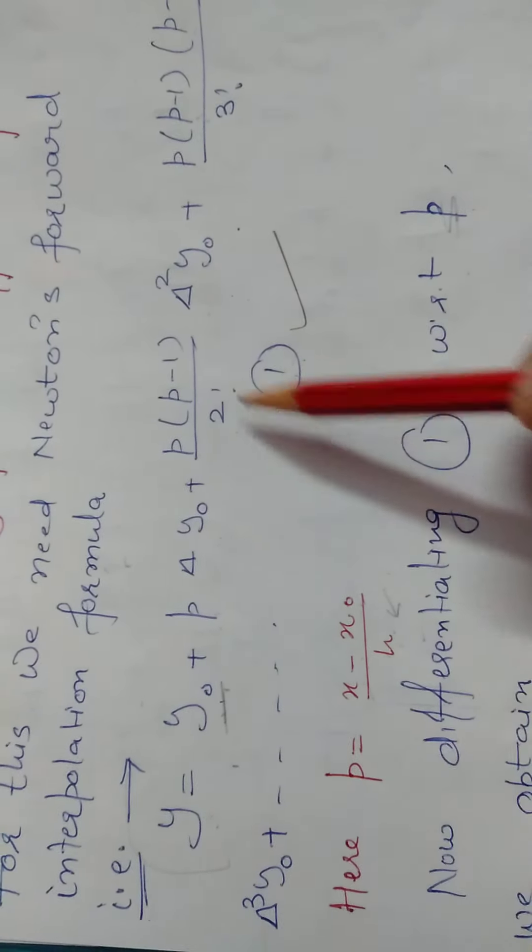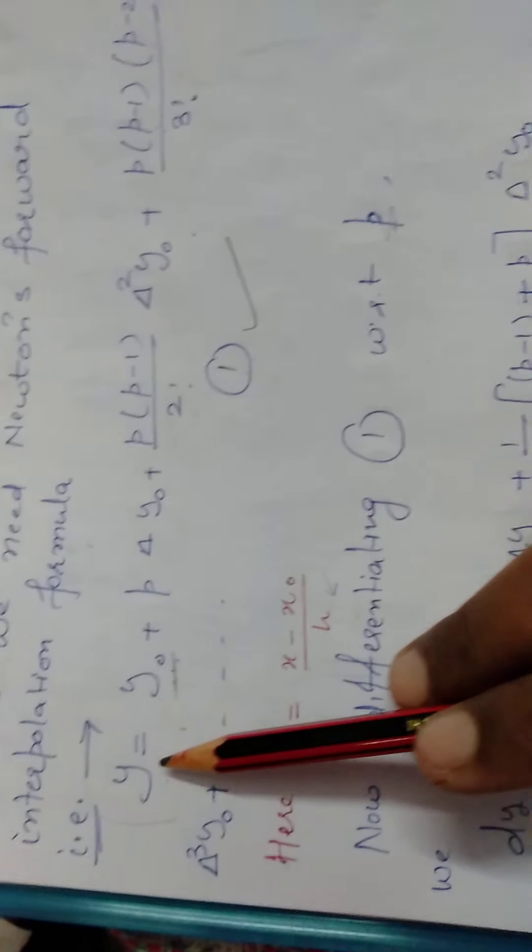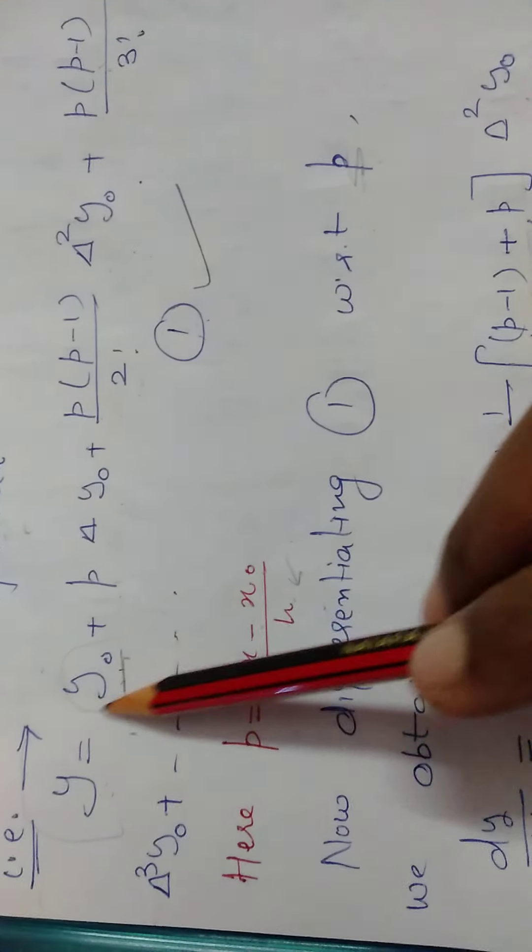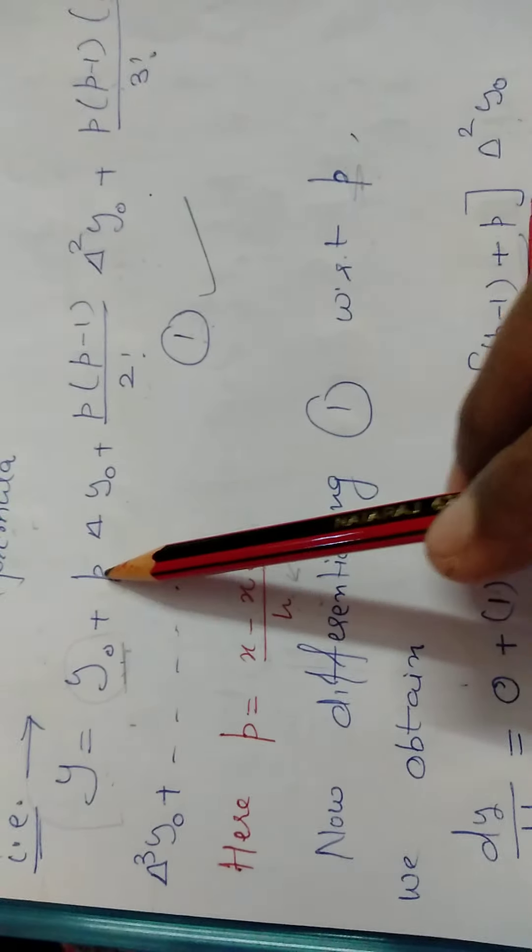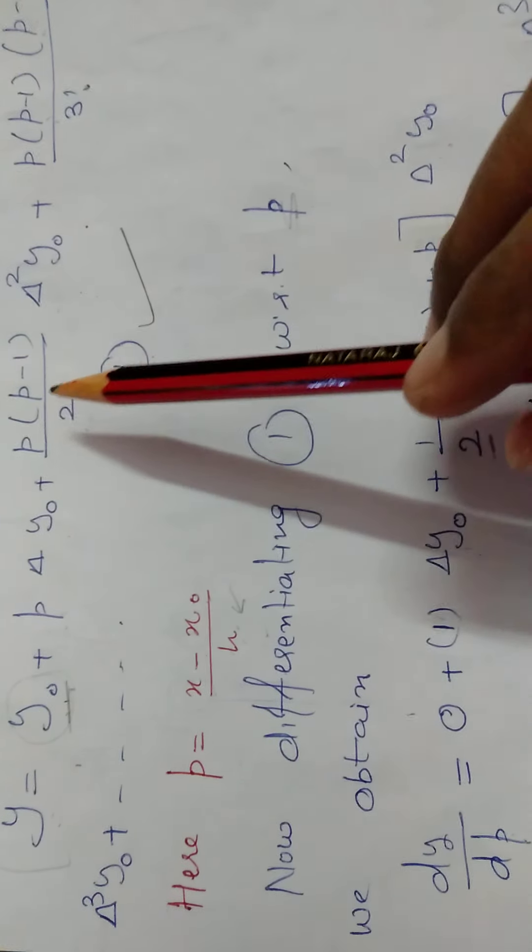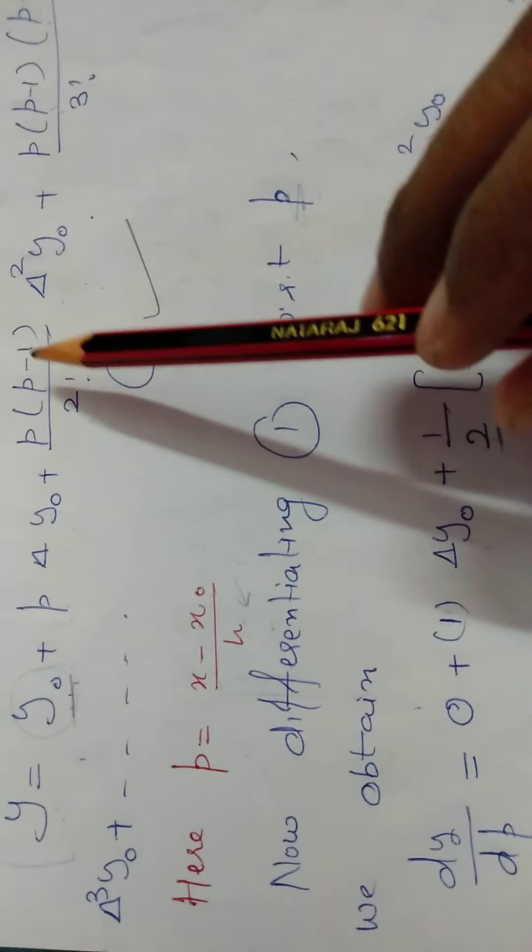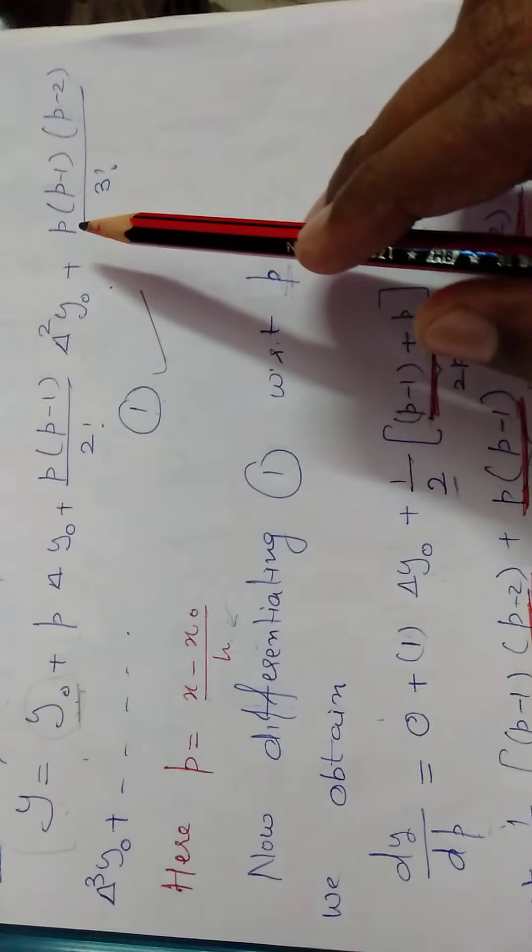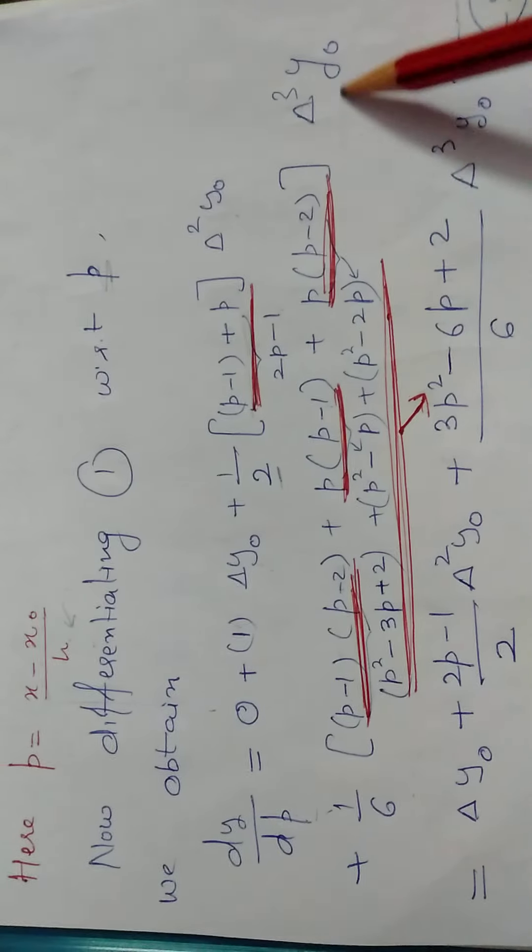We will differentiate this with respect to P. The left hand side becomes dy by dp. Derivative of y naught is constant 0. Derivative of P is 1 into delta y naught. Derivative of P into P minus 1, then derivative of P minus 1 is 1 into P del square y naught, and similarly for rest of factors.